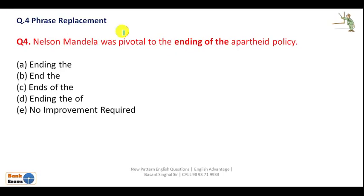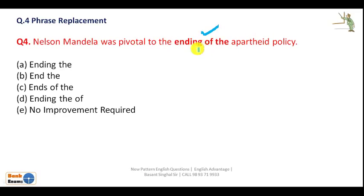Question 4: 'Nelson Mandela, who was pivotal to the ending of the apartheid policy.' 'Pivotal' means he was the main instrument — he was instrumental. The apartheid policy was the discrimination policy against Black people by white people. 'Ending of the apartheid policy' is correct here, so the answer is no improvement required.